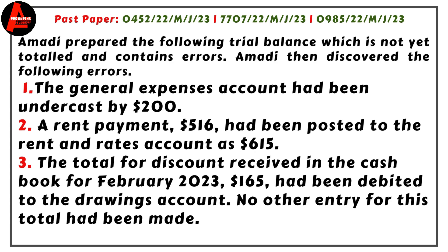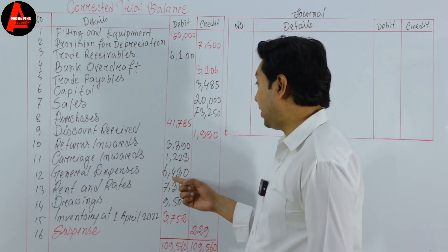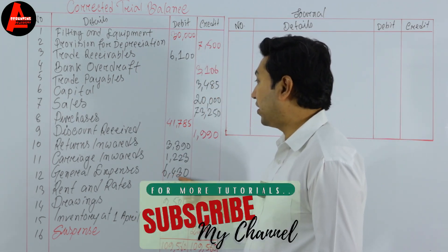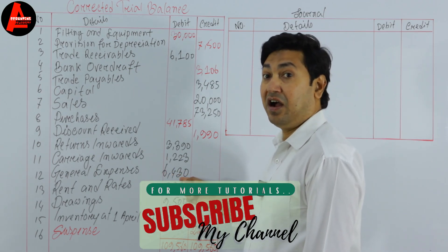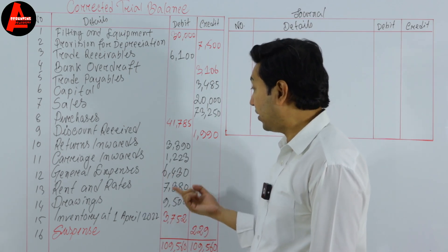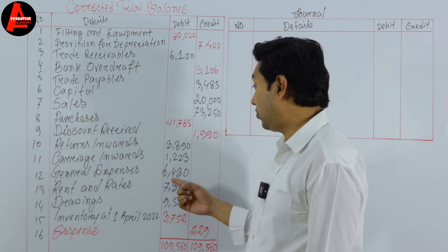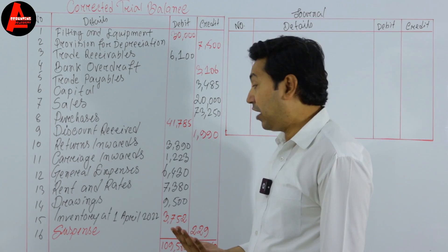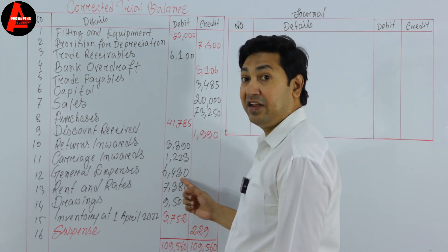We see three errors. The first one: the general expenses account had been undercast by $200. General expenses is on the trial balance — we see $6,430. This account, this amount is undercast, meaning this $200 should be added with this amount. So general expenses becomes $6,430 plus $200 equals $6,630.